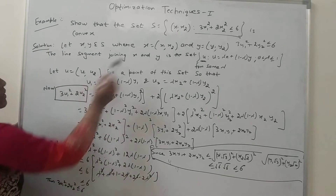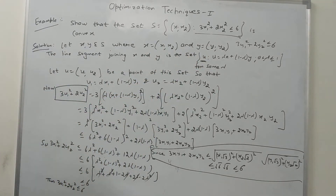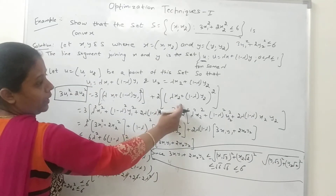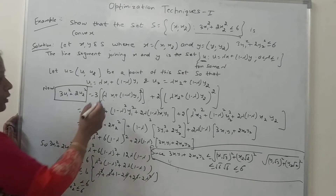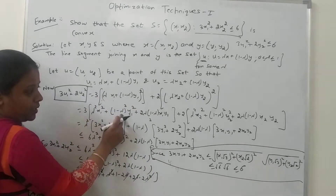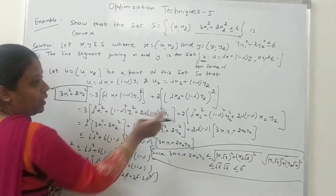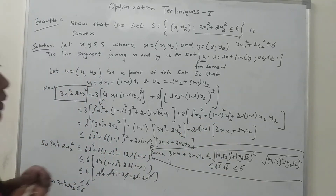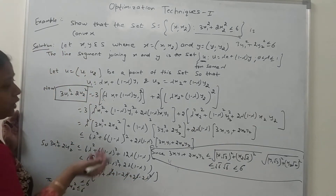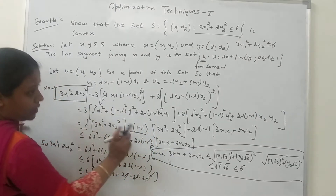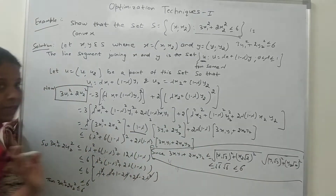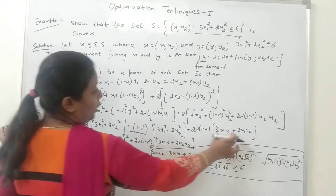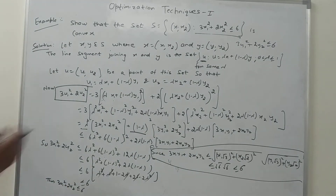I take 3U1² + 2U2². Substituting U1 and U2: 3(λX1 + (1−λ)Y1)² + 2(λX2 + (1−λ)Y2)². Expanding the brackets gives λ²X1² + (1−λ)²Y1² + 2λ(1−λ)X1Y1, and similarly λ²X2² + (1−λ)²Y2² + 2λ(1−λ)X2Y2. Taking common factors: λ²(3X1² + 2X2²) + (1−λ)²(3Y1² + 2Y2²) + 2λ(1−λ)(3X1Y1 + 2X2Y2).